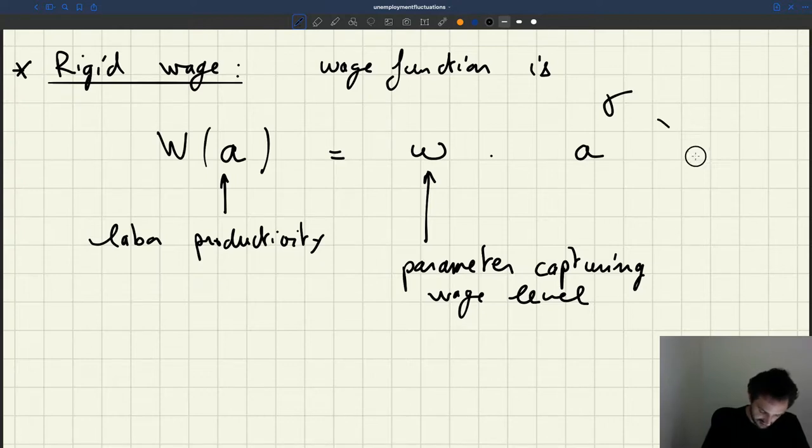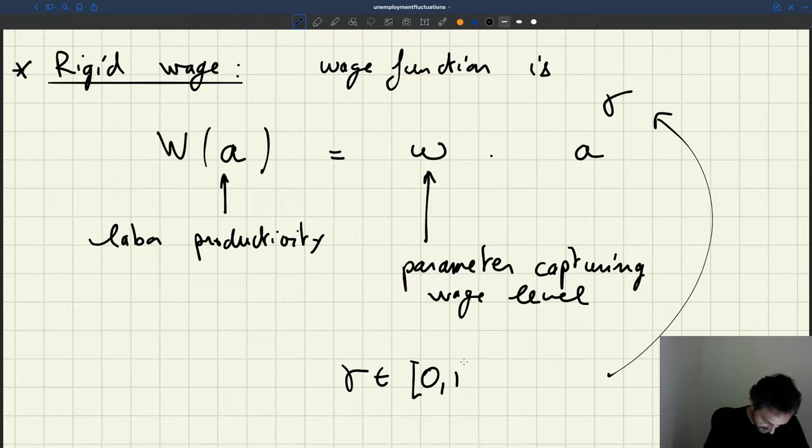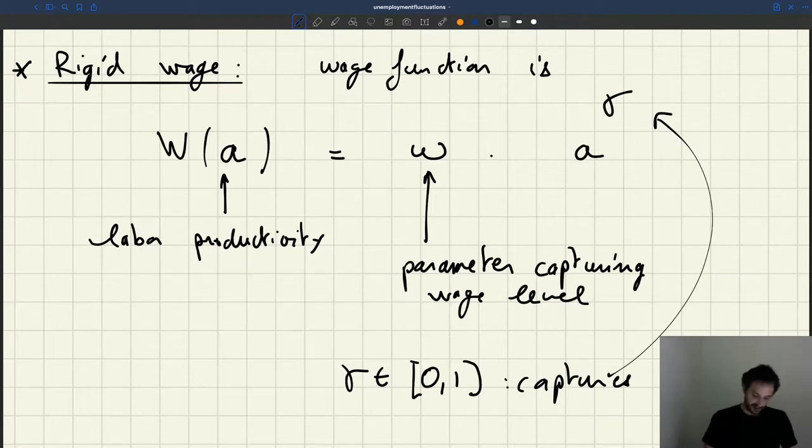And gamma, it's another parameter. So we'll assume that it's between 0 and 1. And this parameter is going to capture the rigidity of wages. That's going to be our rigid wage here.